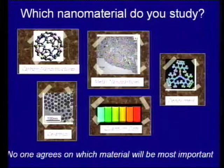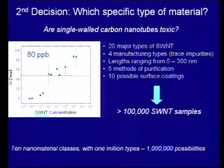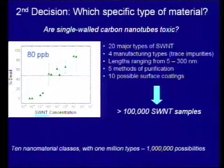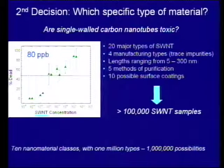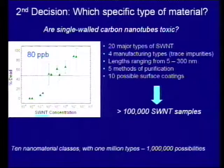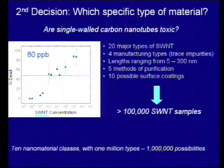It gets much more complicated because as a chemist, let's say we decide single-walled nanotubes — a very hot area. I can make you at least 100,000 different types: different chiralities, different surfaces, different lengths. This is a conversation I've had with toxicologists: is a single-walled nanotube toxic? There's some toxicology data, a typical LC50 graph. But the problem is that was for a single nanotube, and I have the ability to change and modify it in any way I want.